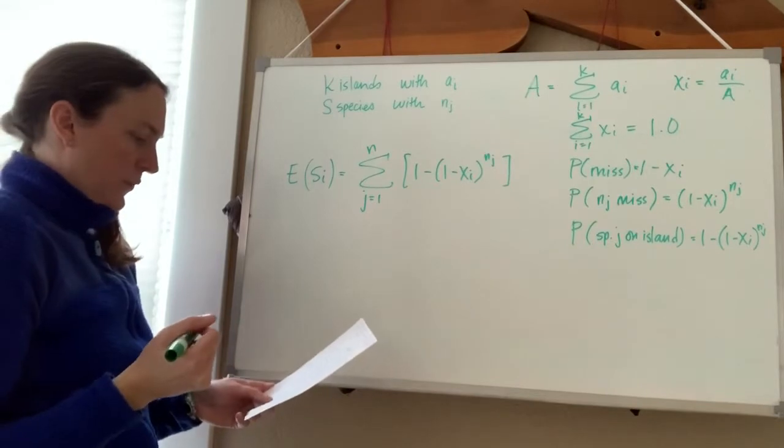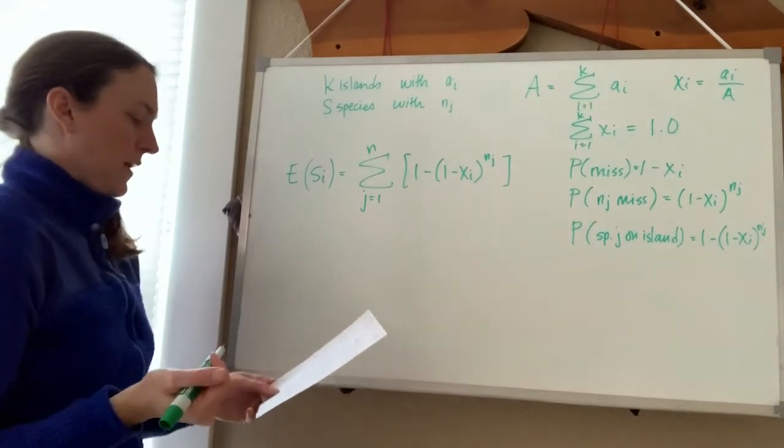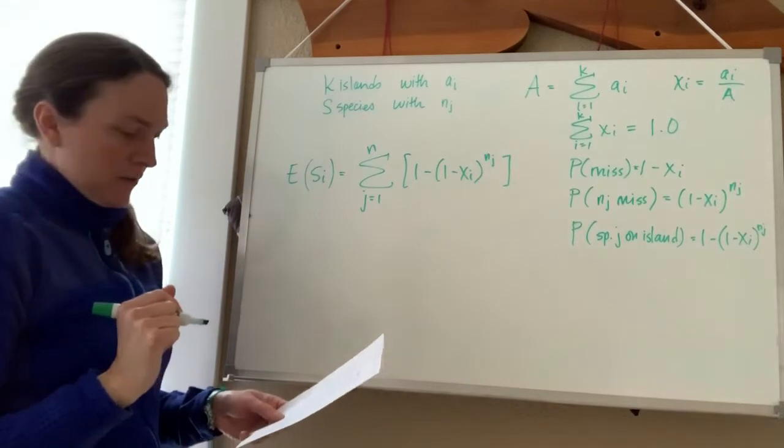So this passive sampling model predicts that an abundant species will have a greater chance of colonizing than a rare species.